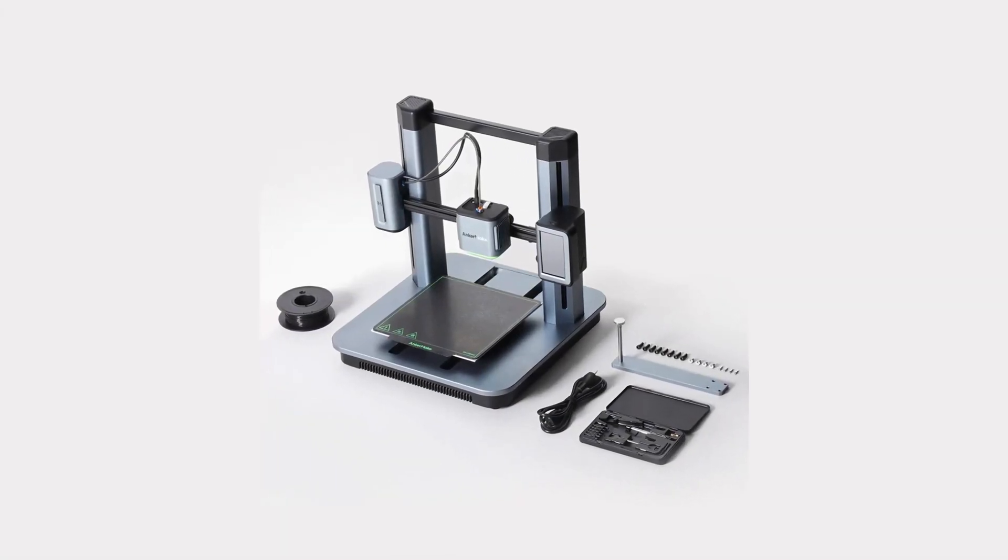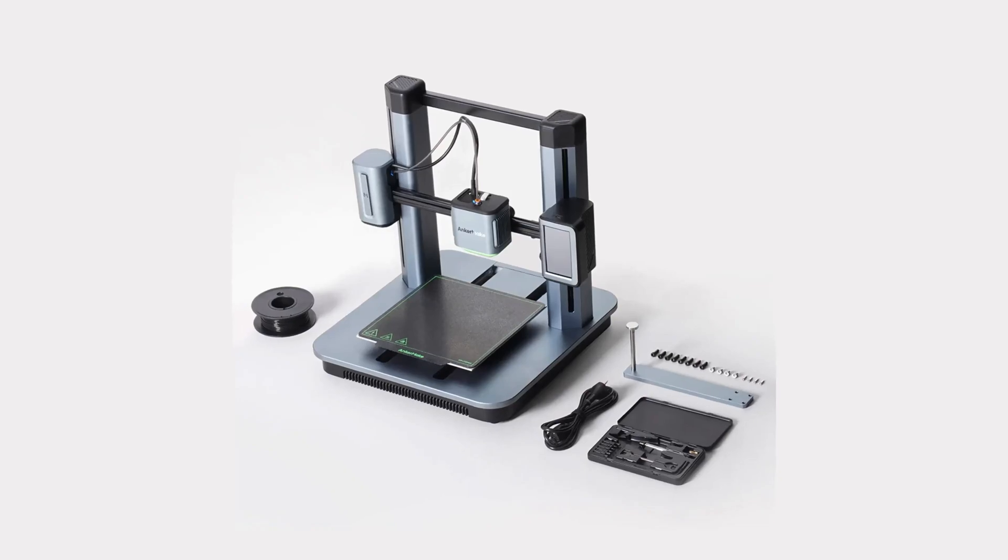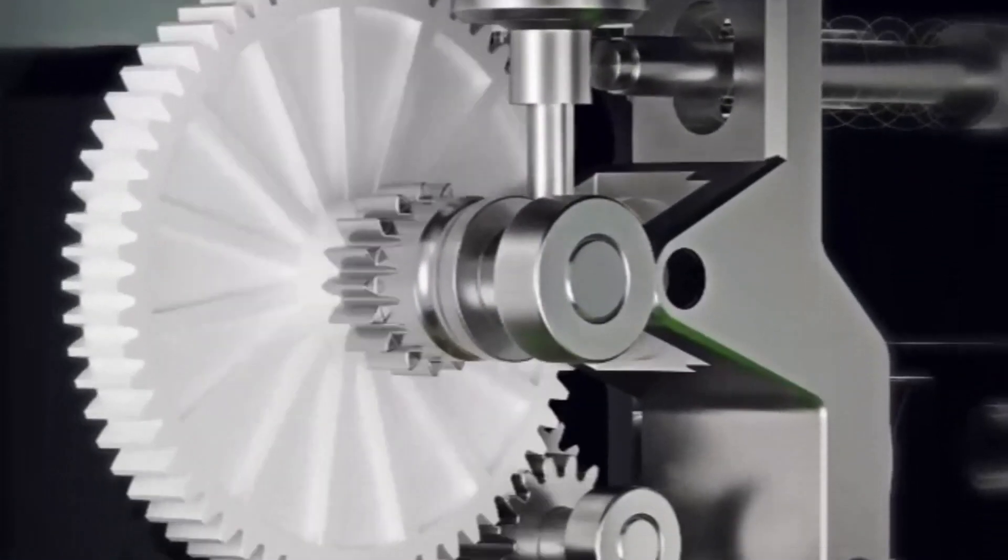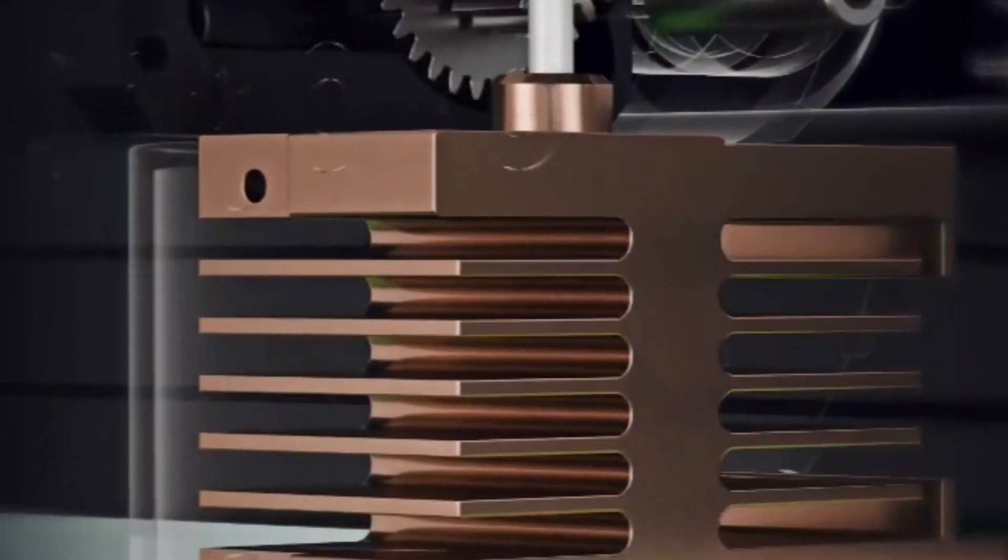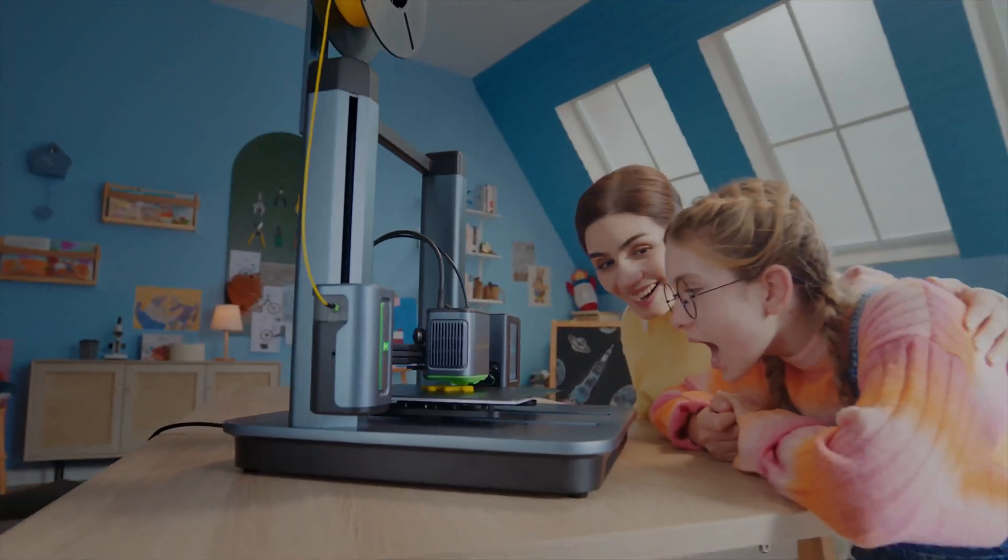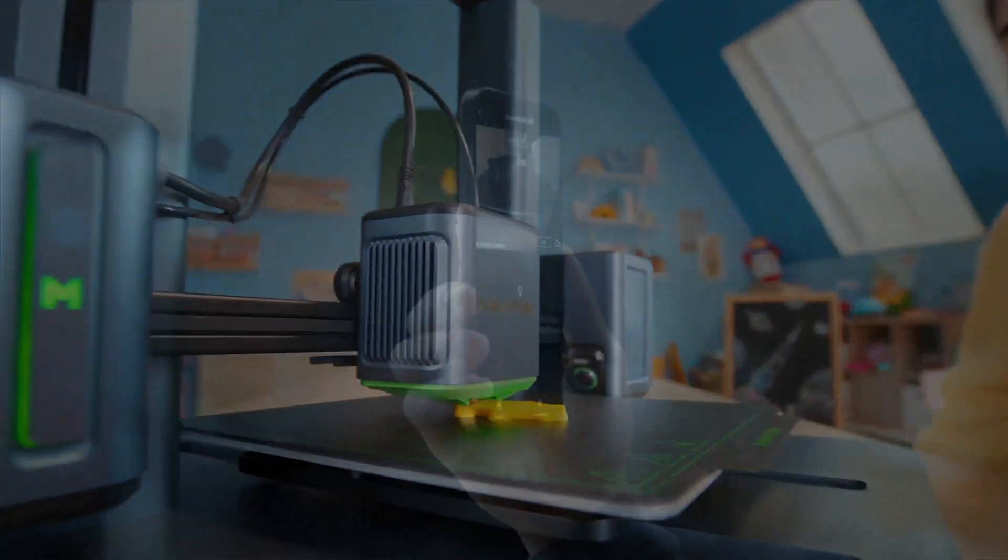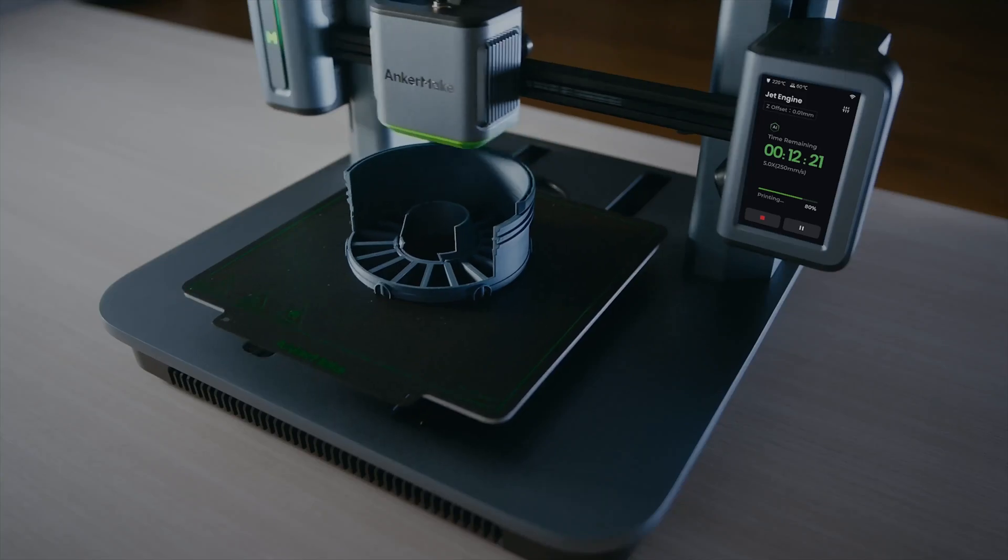Advanced algorithms calculate a virtual height map to get the prints started right. Overall, the Anchormake M5 3D printer is a true marvel, blending cutting-edge features with a user-friendly design. Whether you're a seasoned maker or a newbie, this printer will take your 3D printing experience to new heights.